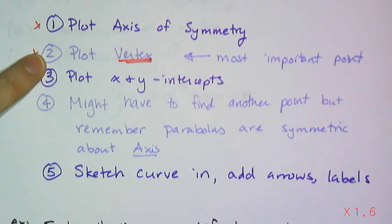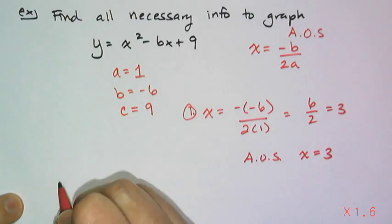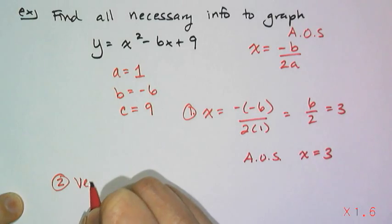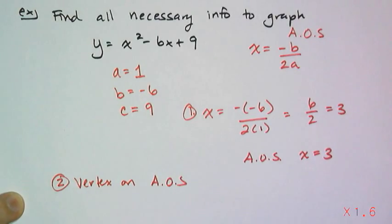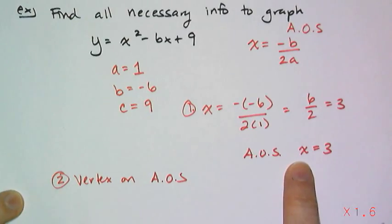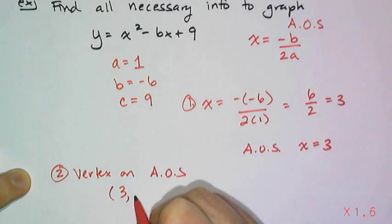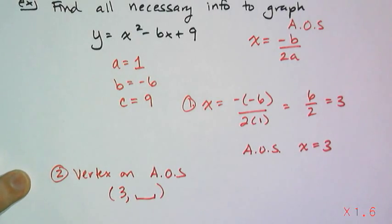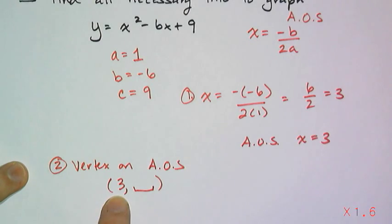Step 2, remember, is to plot the vertex, which means I have to find the vertex. And the vertex, remember, is on the axis of symmetry. And I know the x value for the vertex. It has coordinates 3 comma something, because it has to be on the axis of symmetry. And the only thing is I don't know what the y value is, but I have the equation that I can use to figure out the y value.